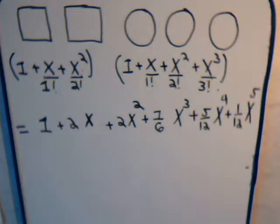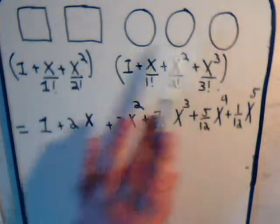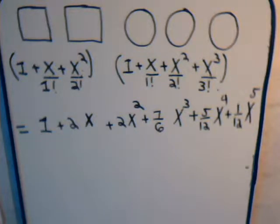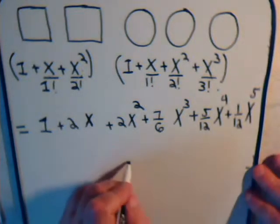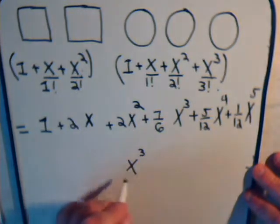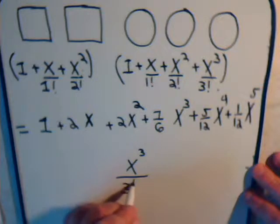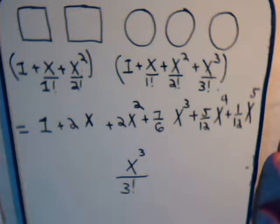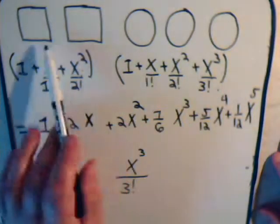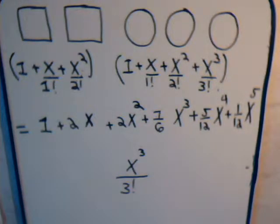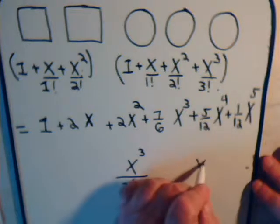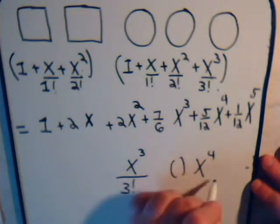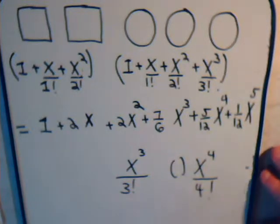Here's why this is important. If we have 2 squares and 3 circles and ask how many ways can we select 3 of the objects where order matters, the answer is the coefficient of x cubed divided by 3 factorial. If we want to know how many ways we can select 4 of these objects when the order matters, the answer is the coefficient of x to the 4th divided by 4 factorial.